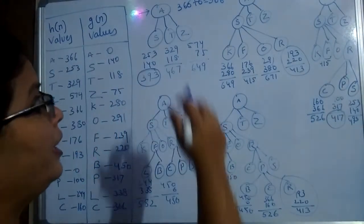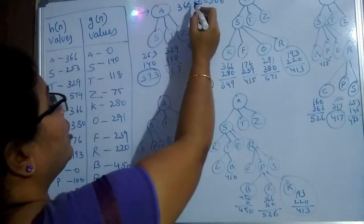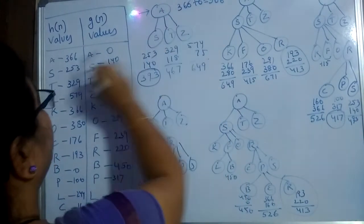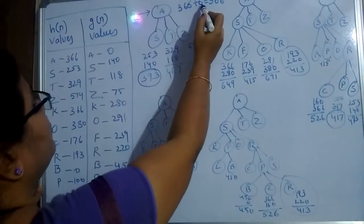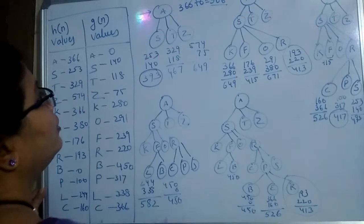Now we are going to start with A. At A, I have calculated H of N plus G of N. A is 366 and G of N is equal to 0, so I added total, I got 366.